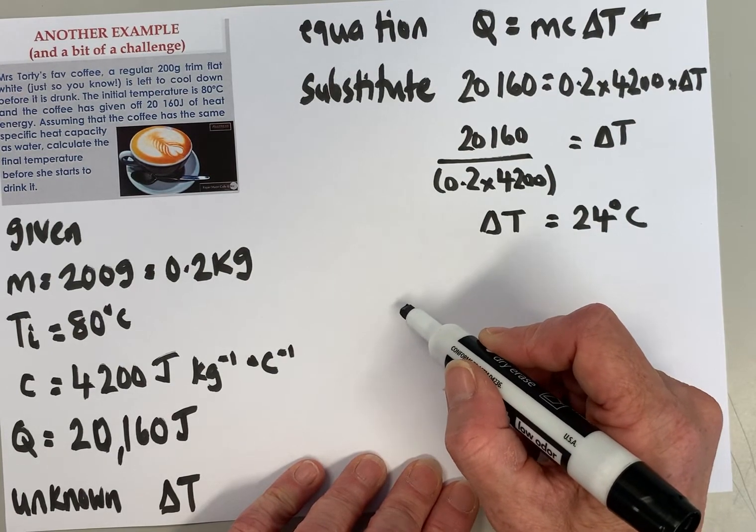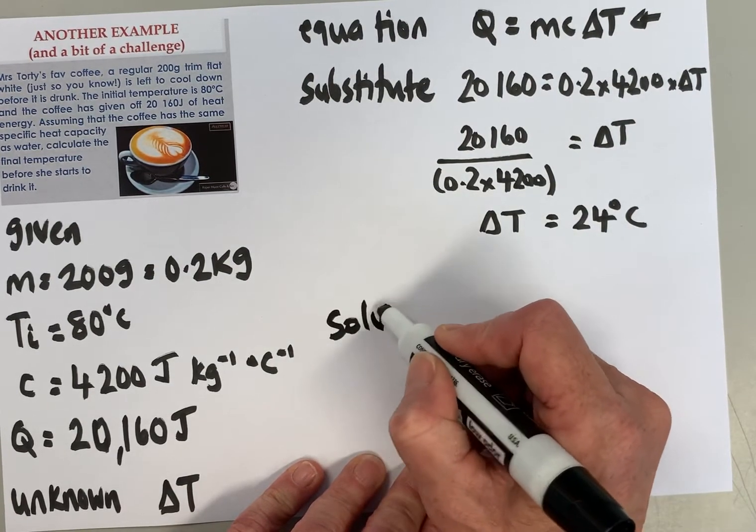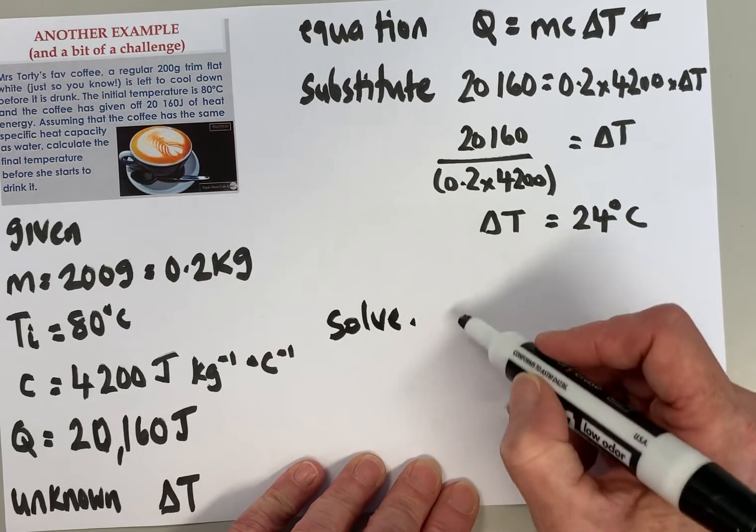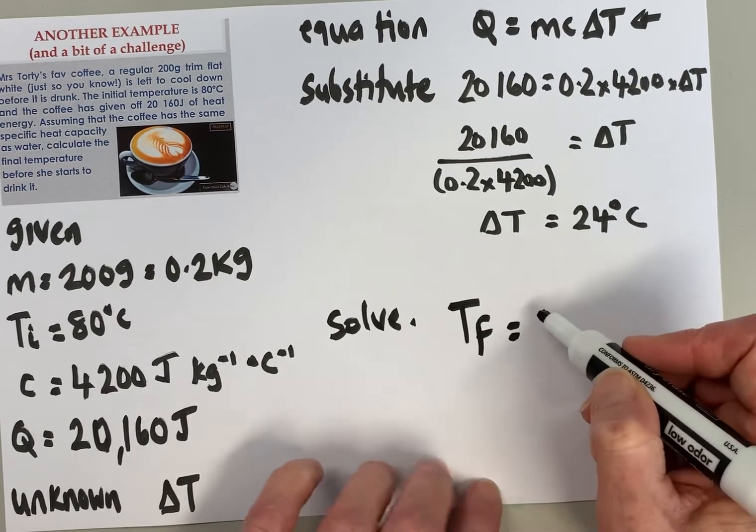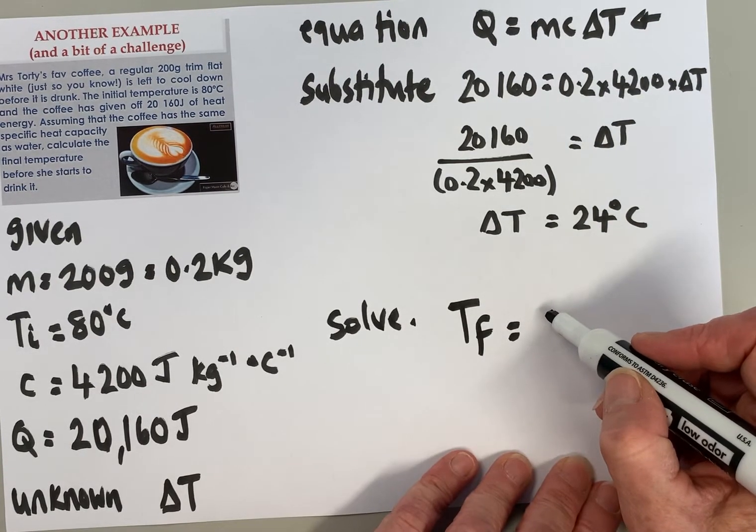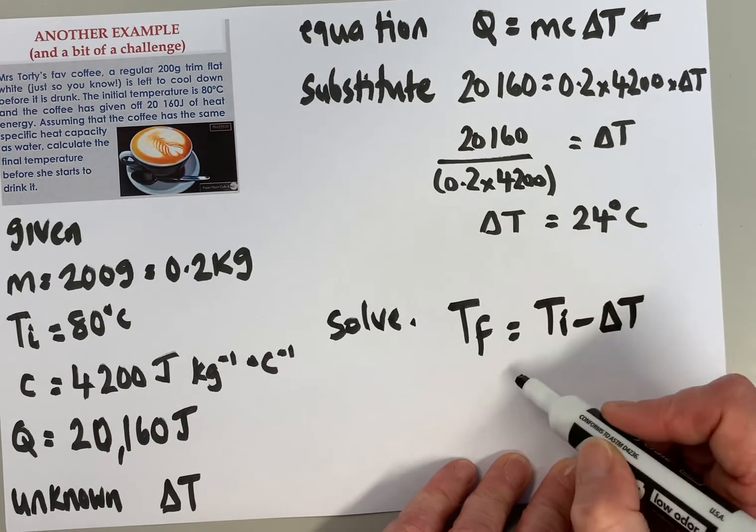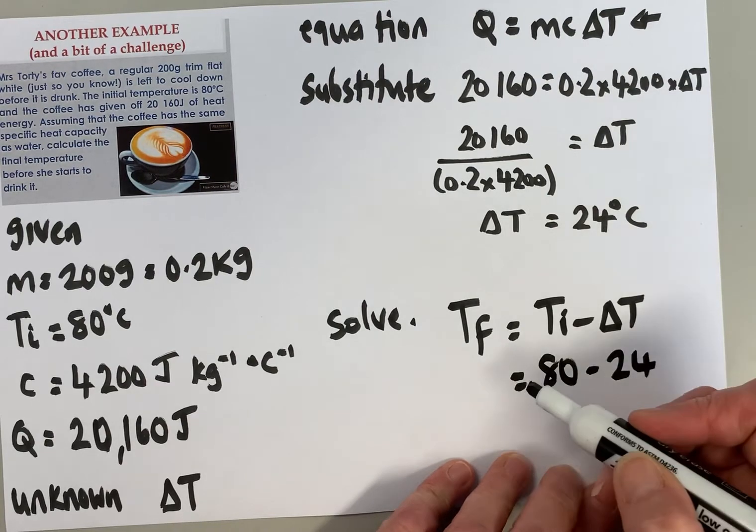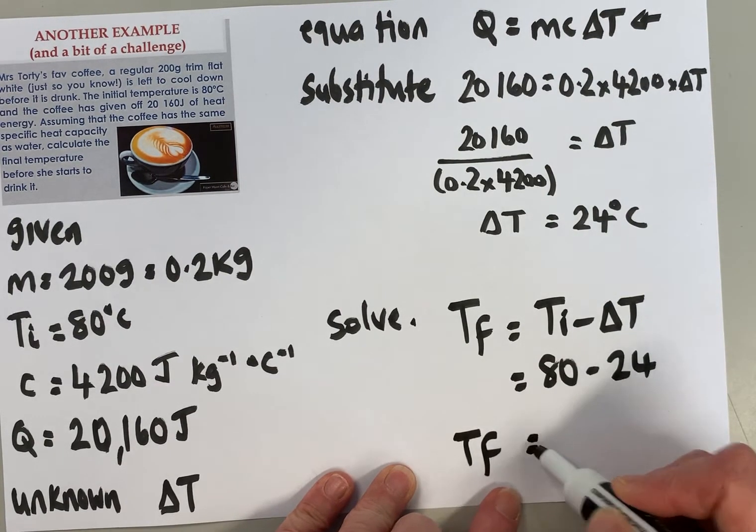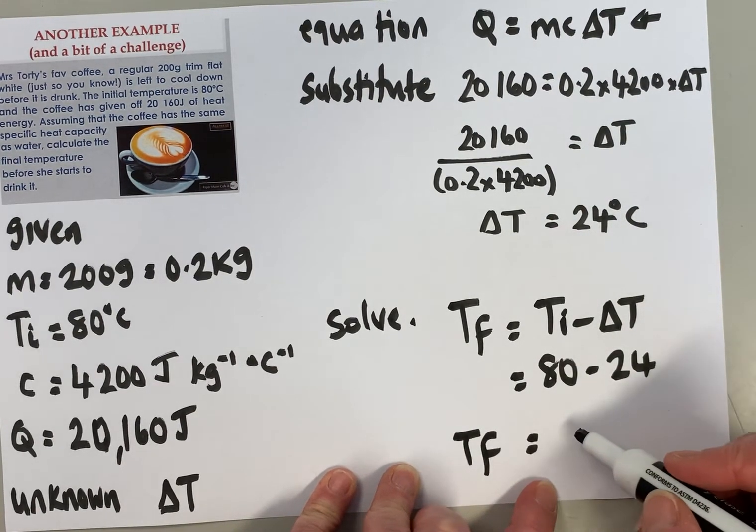Okay, so if the coffee starts at 80 and the temperature difference is 24, then we're going to Solve this time. The final temperature is the initial temperature minus the change in temperature, so it's 80 - 24.